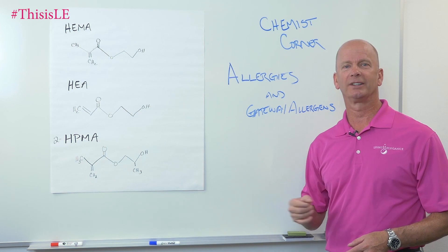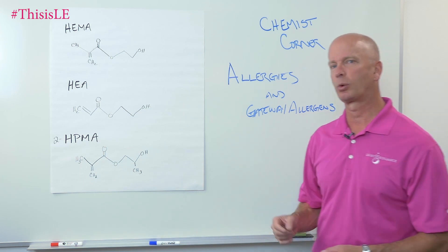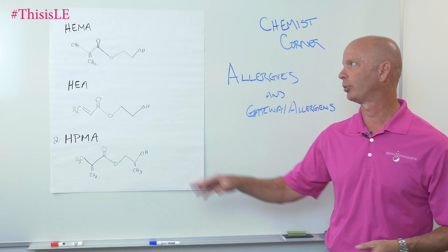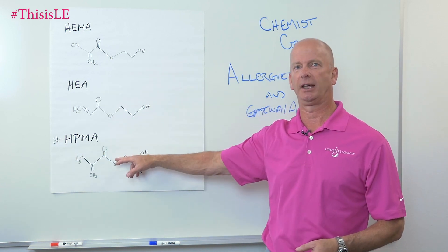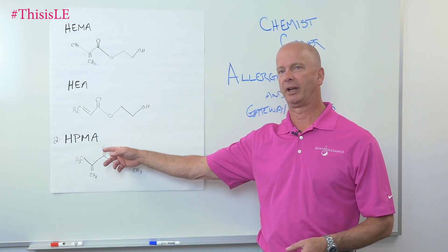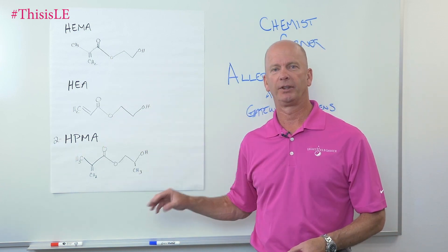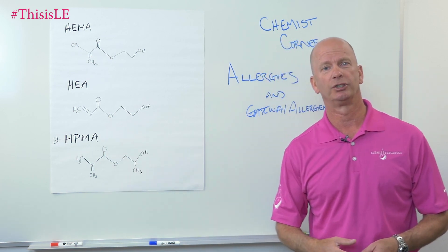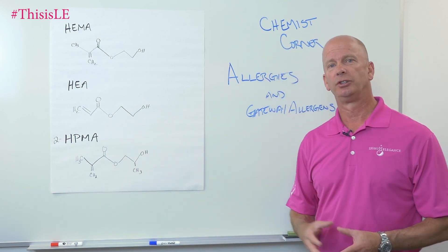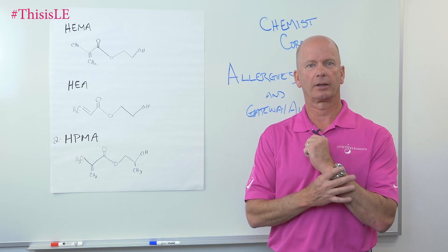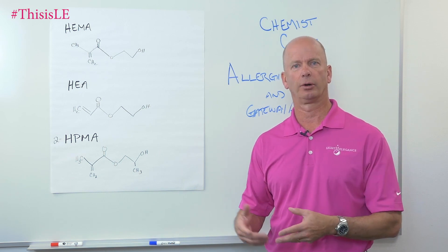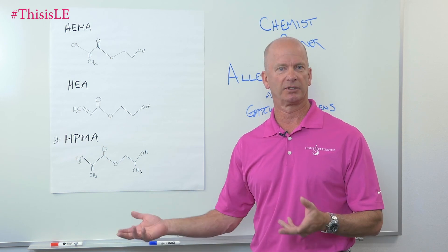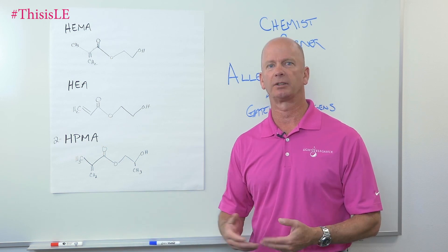So what exactly does that mean? In Chemist Corner number one, we talked about what organic is, and I pointed out HEMA, HEA, and HPMA. These are just good examples of some of the monomers that we use when we make gels. Gels are thick, viscous, liquid products that cure under a source of energy — most of the time light.